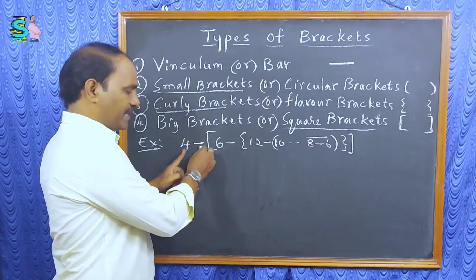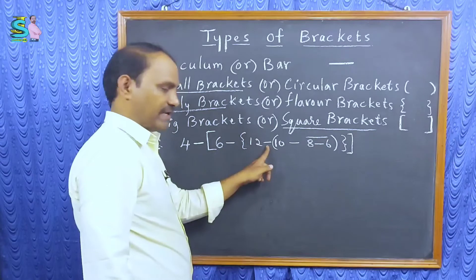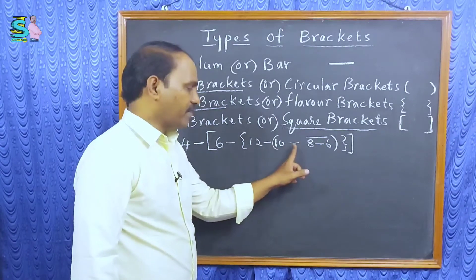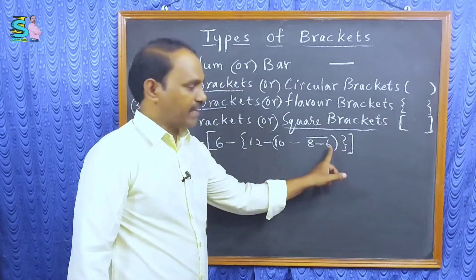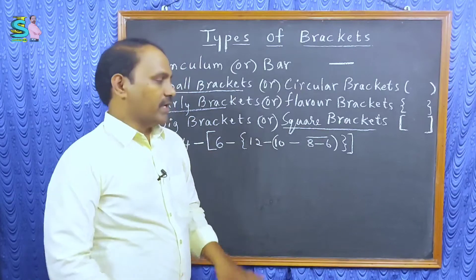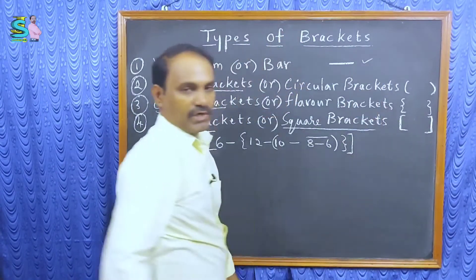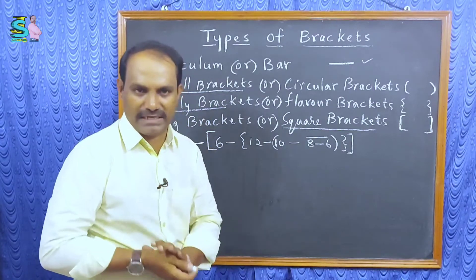4 minus square brackets, 6 minus curly brackets, 12 minus in small brackets, 10 minus 8 minus 6. So, you can start the calculation from vinculum only.